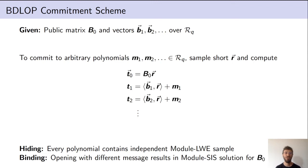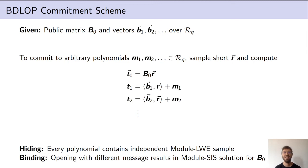The scheme is hiding because every polynomial in T0 and the T_i contains an additive term that is an independent module LWE sample, so all polynomials look uniformly random under the module LWE assumption. The scheme is binding because changing a message M_i without changing the commitment T_i would require changing the randomness vector R, but T0 = B0 R authenticates R, so finding a second valid randomness would yield a module SIS solution.